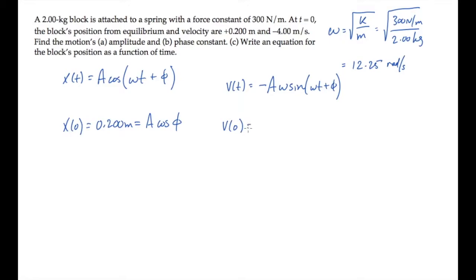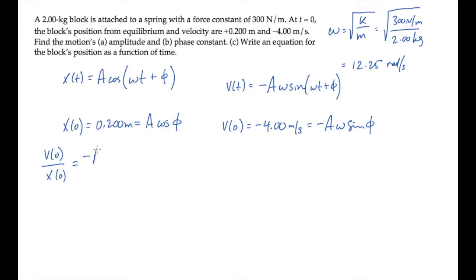Doing the same thing for the velocity v, we get velocity at time 0 — that's minus 4 meters per second — and substituting into the expression gives us minus A·ω·sine(φ). If we divide the expressions for the velocity and position at time 0, we see that the unknown amplitude cancels, leaving us with only one unknown: the phase constant φ.